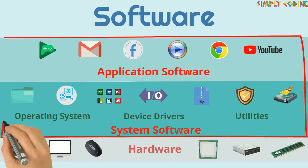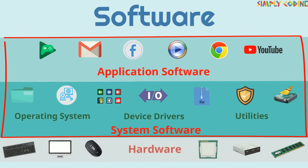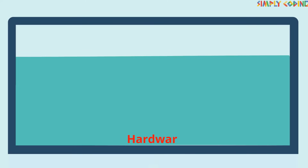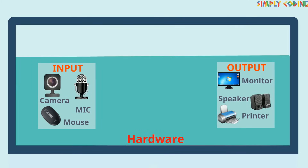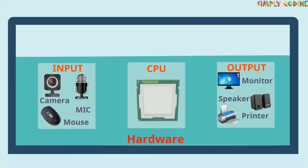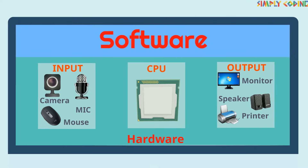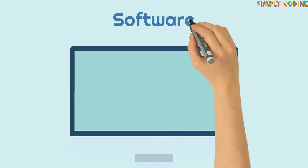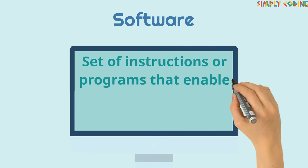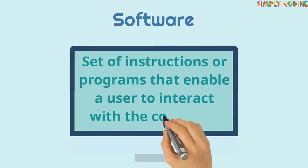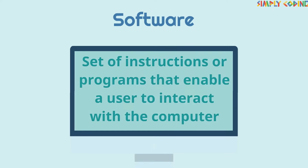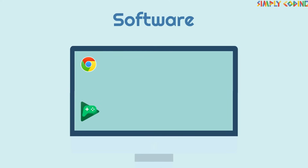Hello, in this video we are going to learn what software is. Up till now, we have seen all the hardware of the computer — the input devices, output devices, CPU box. However, on top of this hardware sits software which helps us to run the computer. Software is a collection of instructions or programs that enable a user to interact with a computer. Examples are all of the apps you use and download on your computer or phone.